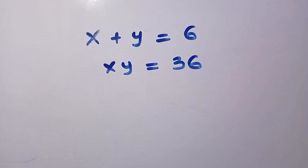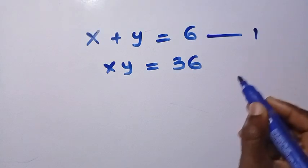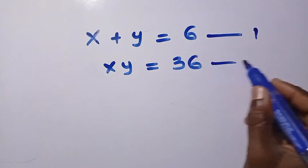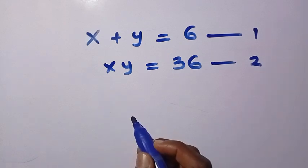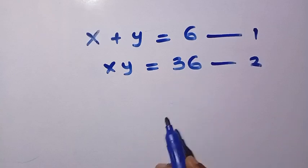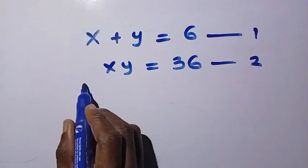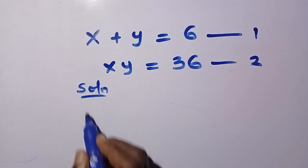Good day viewers, welcome. Today we solve this system of equations: x plus y equals 6, and x times y equals 36. We call these equation 1 and equation 2. We must find the values of x and y such that their sum equals 6 and their product equals 36. Let's solve this with an elegant trick.